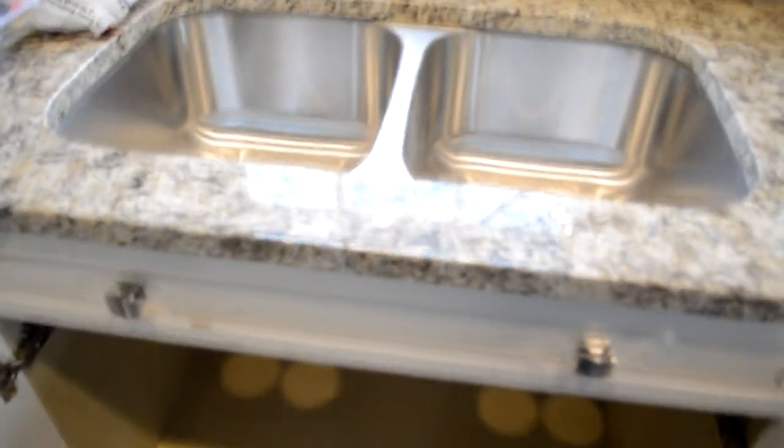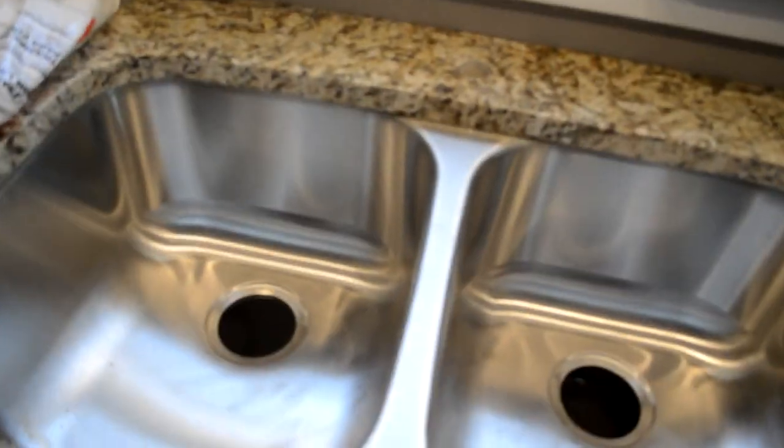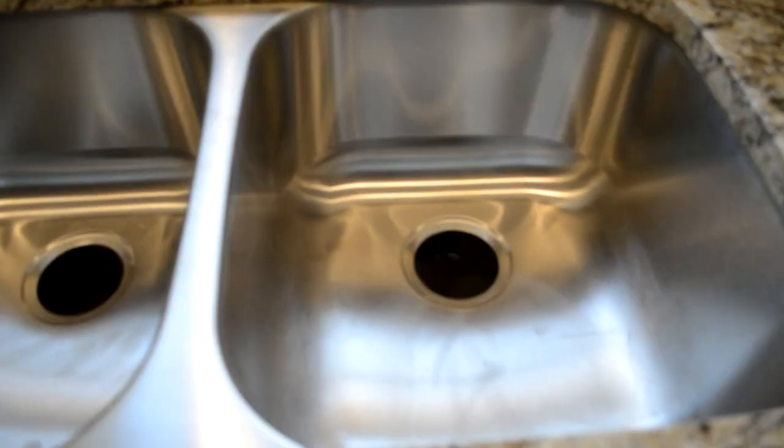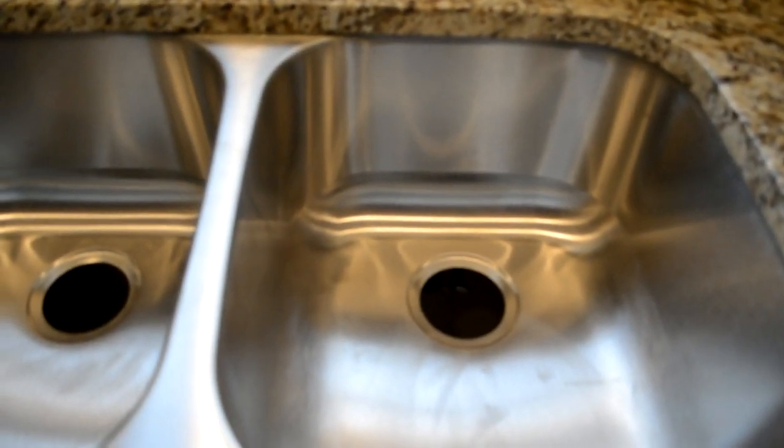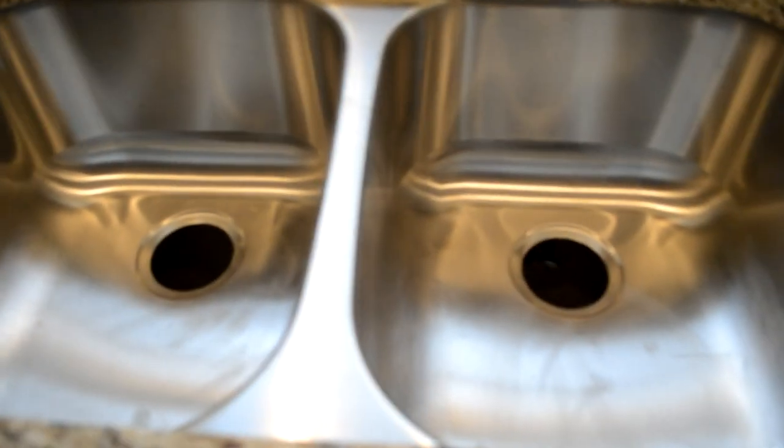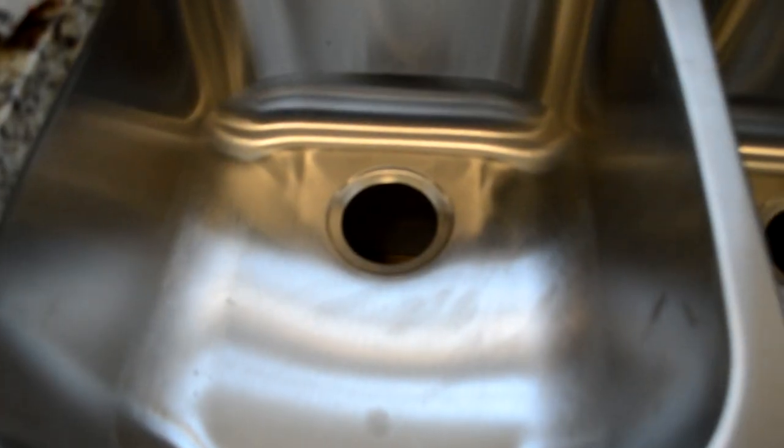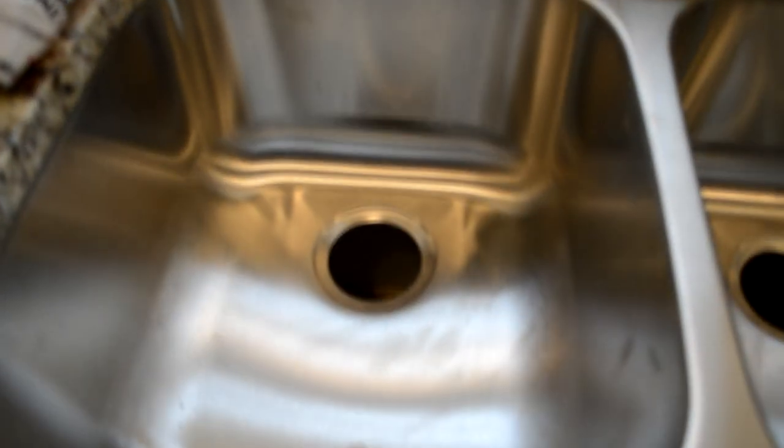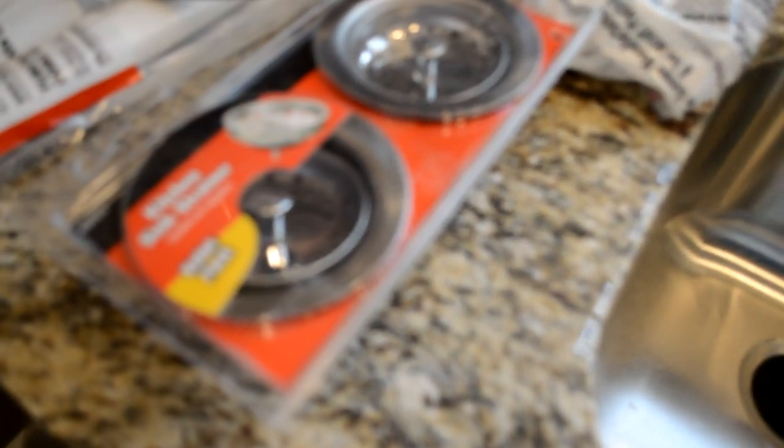When you install this type of sink, you need to install in those two holes something called strainers. The strainers are these things that are here. Sometimes what happens is that if you put a garbage disposer, you're going to need a different type of strainer, a different situation, a different type of style. Make sure that you get the one that is over there.